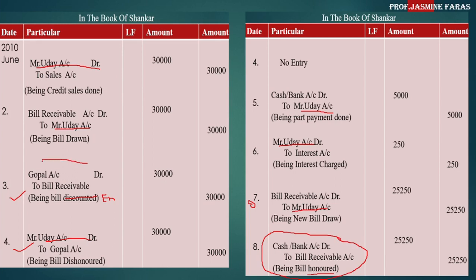When we endorse the bill, discount it, or send it for collection, in those cases there is no drawee name. But from start to bottom, the drawee must appear for payment — that is the trick. I hope you understand the magic: you can check whether your entry is correct or not, provided you follow the steps in the correct order — cancellation, then part payment, then interest charge, then new bill draw.